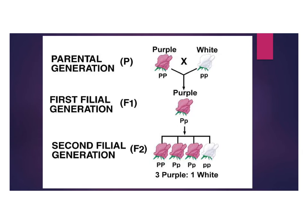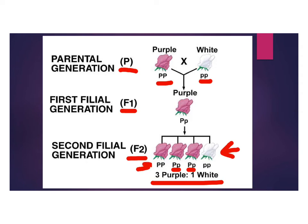In the second filial generation, we had three purple and one white, which now makes sense. You get two heterozygous offspring, which show purple because the recessive hides when the dominant is present. Then you get one white, which received two lowercase p's and is homozygous recessive, and one that is homozygous dominant receiving two capital P's.